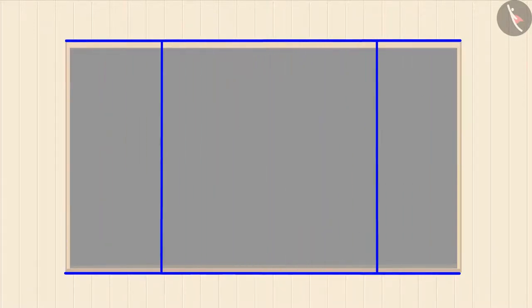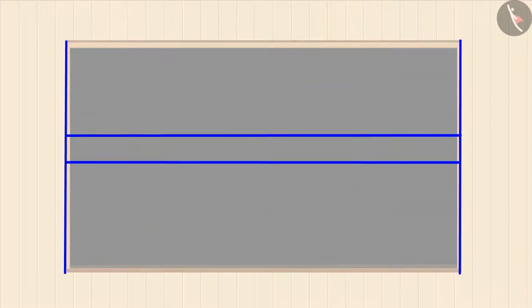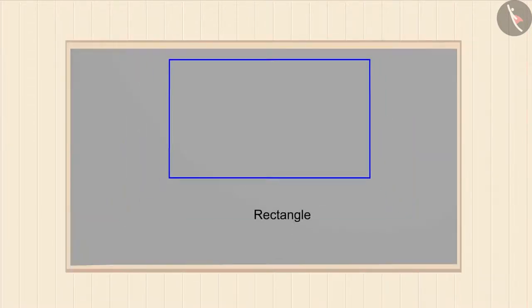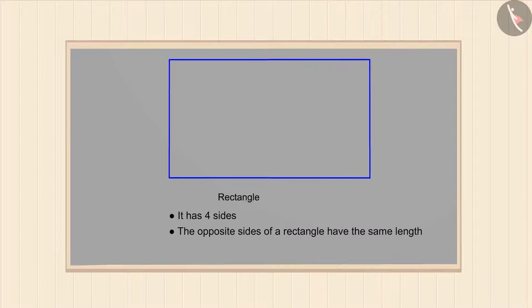You can see that the length of the traced figure is the same and the width is also the same. So this is a rectangle. A rectangle is a shape which has four sides and the length of its opposite sides are the same.